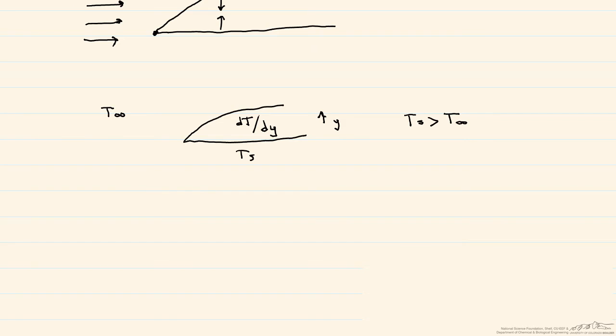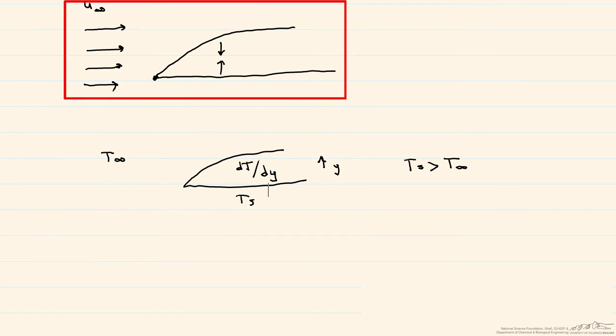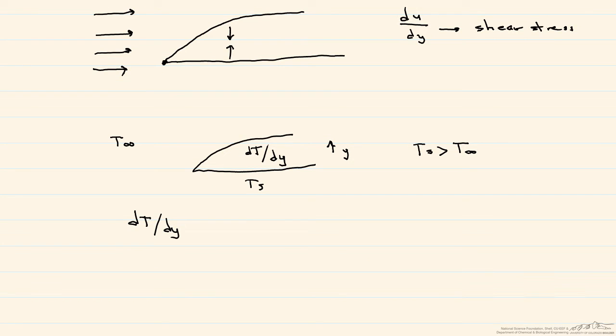If we compare it to fluids, we have this hydrodynamic boundary layer with velocity gradients, and what this causes is shear stress. In our thermal boundary layer, what we have here are temperature gradients, and what that causes is heat transfer, which we'll call Q.